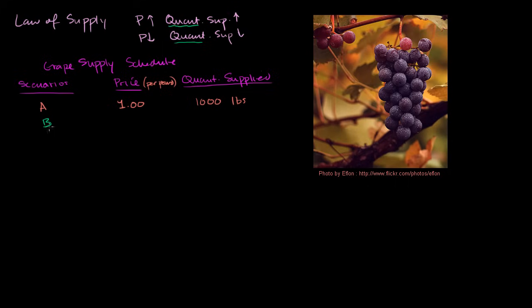Now let's take scenario B. Let's say the price goes up to $2. Well now, not only would we produce what we were producing before, but we might now want to maybe buy some more land, land that might have had other uses, land that's maybe not as productive for grapes. But we would, because now we can get more for grapes. And so maybe now we are willing to produce 2,000 pounds.